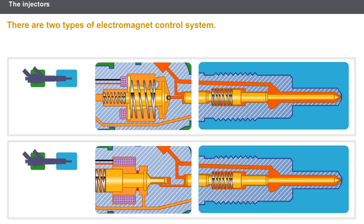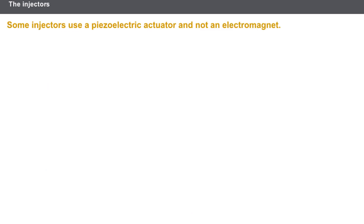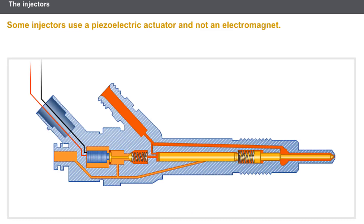There are two types of electromagnet control system. Some injectors use a piezoelectric actuator and not an electromagnet; however, the operation remains the same.